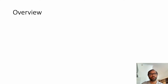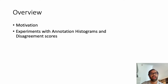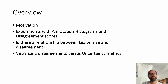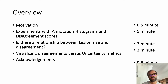Here's an overview of what I'm going to cover in the next about 10 to 15 minutes. I'll start with some motivation for why we're doing this. I'll then go into some experiments with annotation histograms and disagreement scores between the seven annotators. Then we'll look at the question of whether there is a relationship between lesion size and the annotator disagreement or the data uncertainty. Finally, we'll attempt to visualize these disagreements or data uncertainty with the model uncertainty metrics that have been provided.